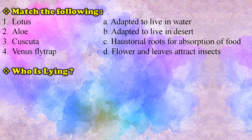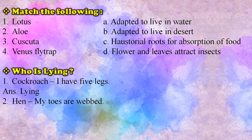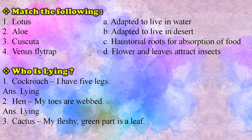Who is lying? Cockroach says: I have five legs — it's lying. Hen says: my toes are webbed — it's lying. Cactus says: my fleshy green part is a leaf — it's lying.